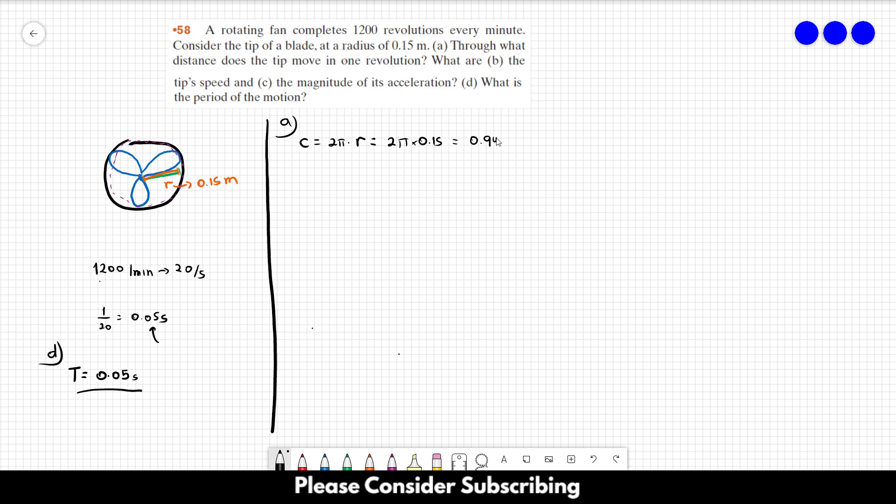For letter b: What are the tip's speed? The speed is equal to delta x over delta t. In one revolution, delta x is equal to c, and the time it takes to do one revolution is the period, this value over here. So this is equal to 0.94 over 0.05, and this gives us 19 meters per second.